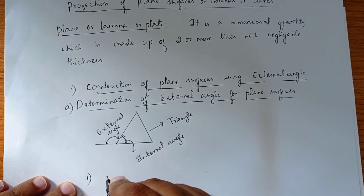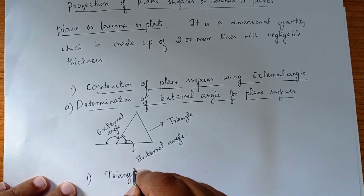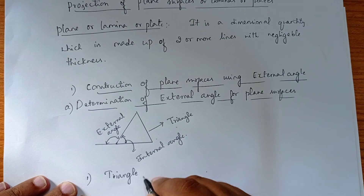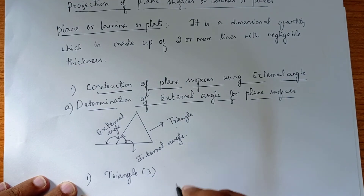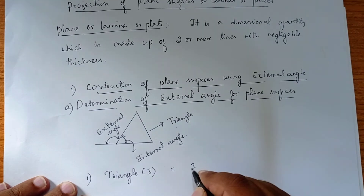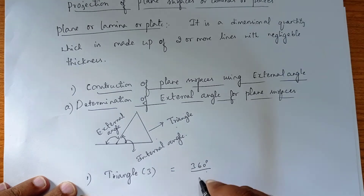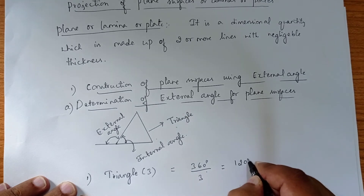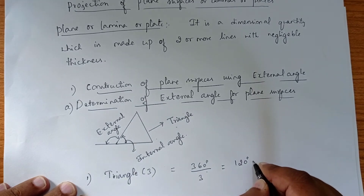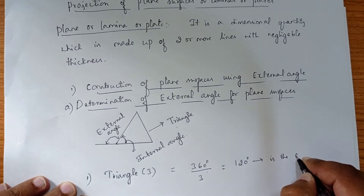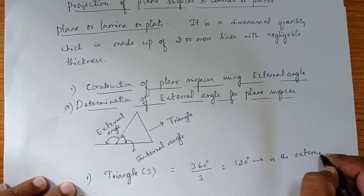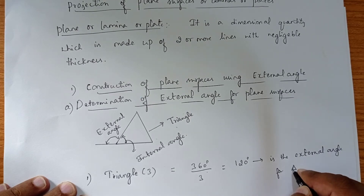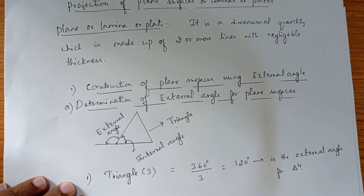The first one is a triangle. A triangle consists of three sides. To find the external angle, divide 360 degrees by 3, so we get 120 degrees. So 120 degrees is the external angle for a triangle.